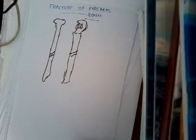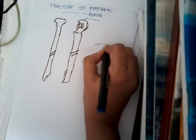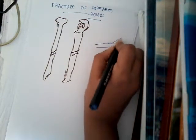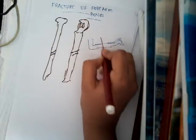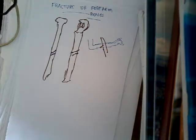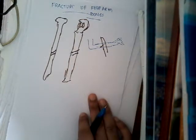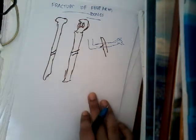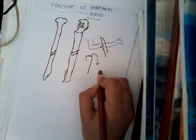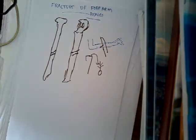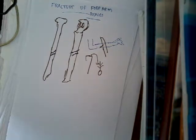So what are the causes of forearm fractures? First, this can be because of a direct blow — a lati — on the forearm. Whenever a lati hits on the forearm, it can cause a fracture. Or there can be an indirect force, where there is a fall on the hand. If the person falls and lands on the hand, there is a force which transmits to the radius and ulna, thus causing fracture of forearm bones.